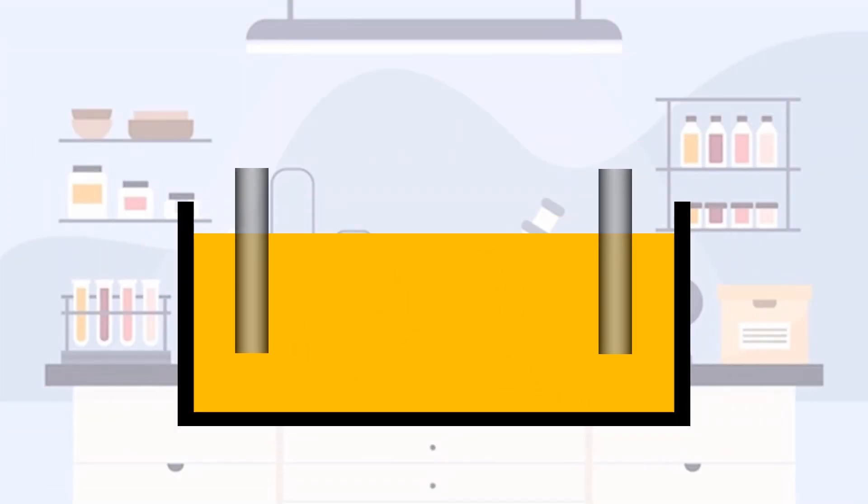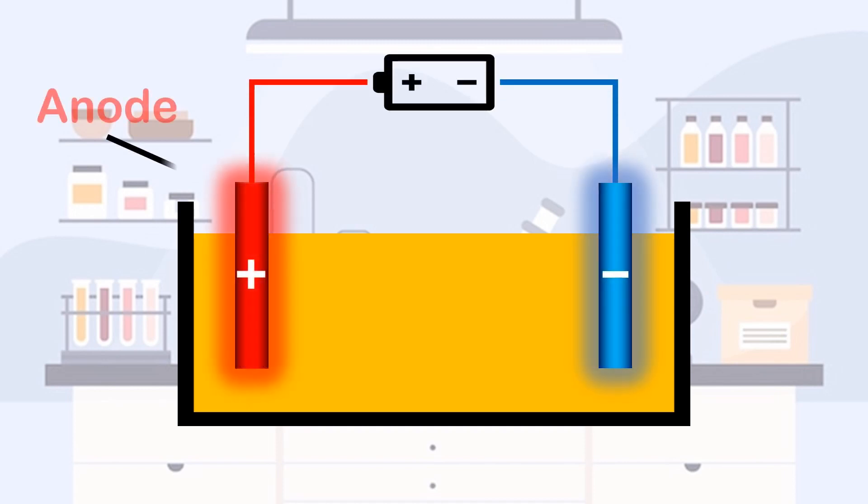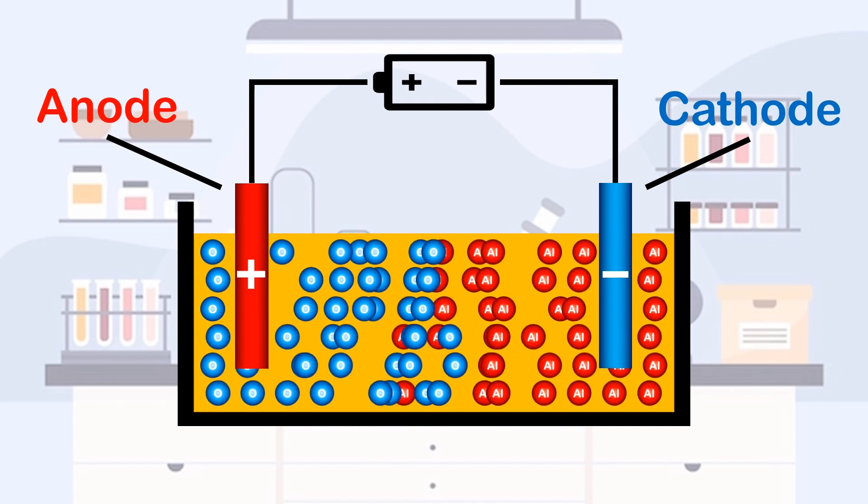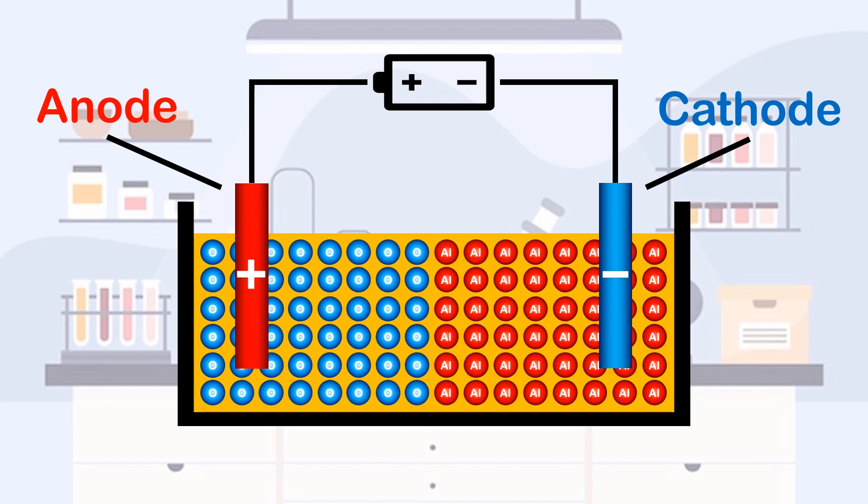We then place two electrodes or conducting rods into our electrolyte, which is attached to a DC power supply. The positive electrode is called the anode and the negative electrode is called the cathode. The negative oxygen ions are attracted to the positive anode and the positive aluminium ions are attracted to the negative cathode.